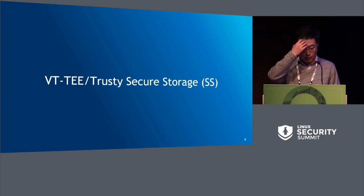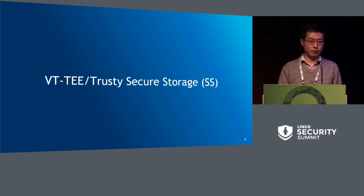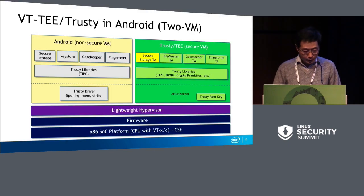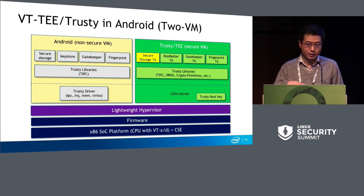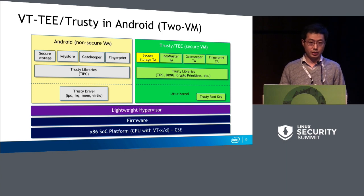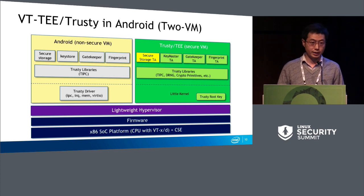Next I'm going to talk about the software stack — how to build the software stack to enable this RPMB partition and build a secure storage solution. In these two days, many people have talked about how to protect Linux, how to secure Linux. But here I'm assuming that the Android system is compromised. So we need to build a TEE — trusted execution environment — on the right side. If this is an ARM system, ARM TrustZone supports two worlds: the secure one and the non-secure one. On X86 platforms, we use virtualization technology to isolate the TEE environment.